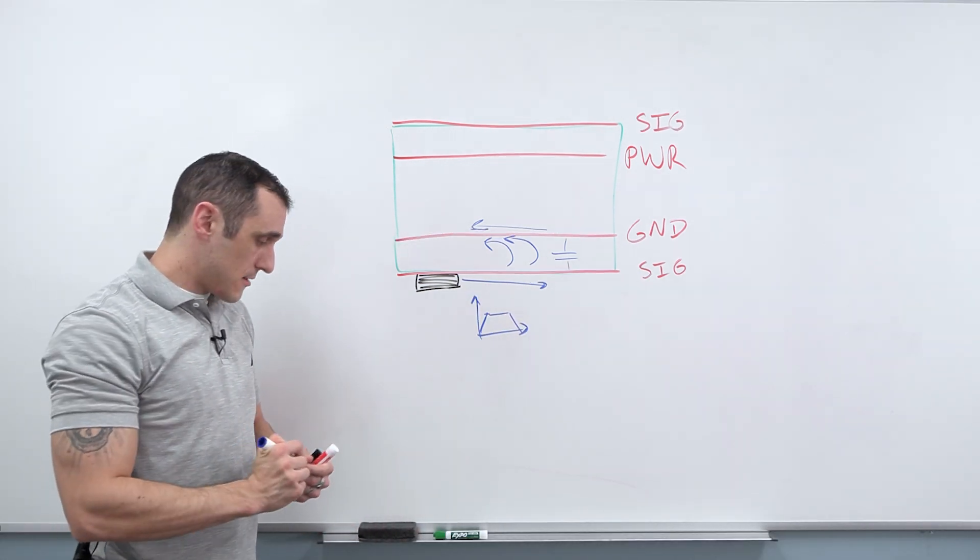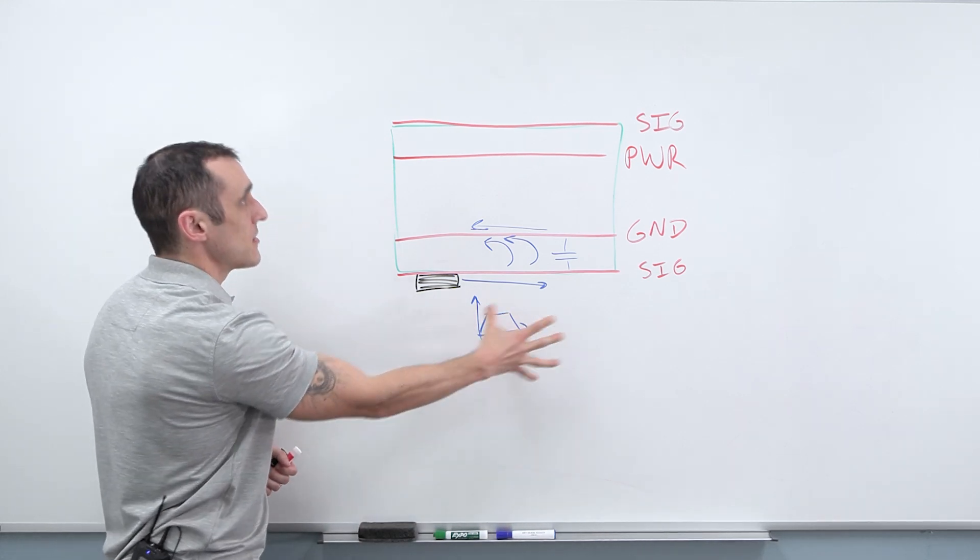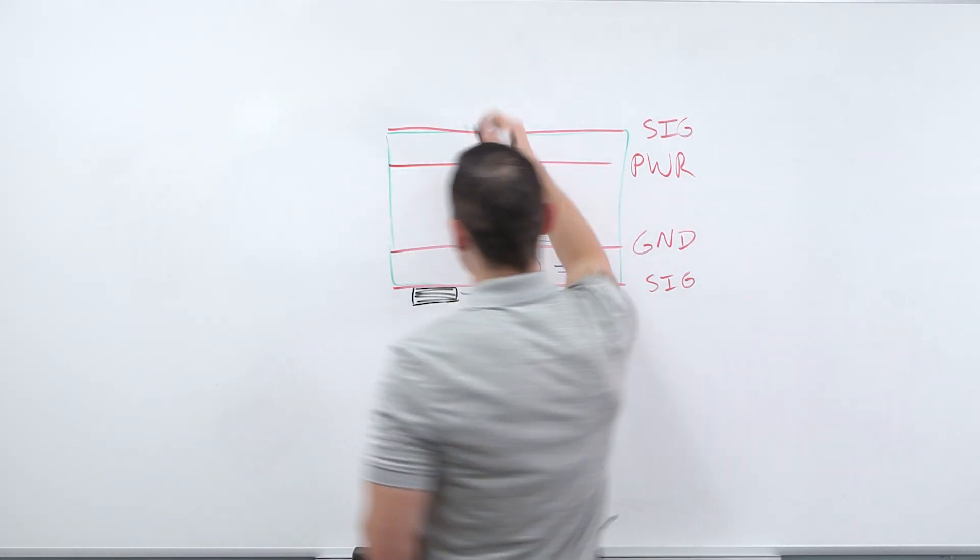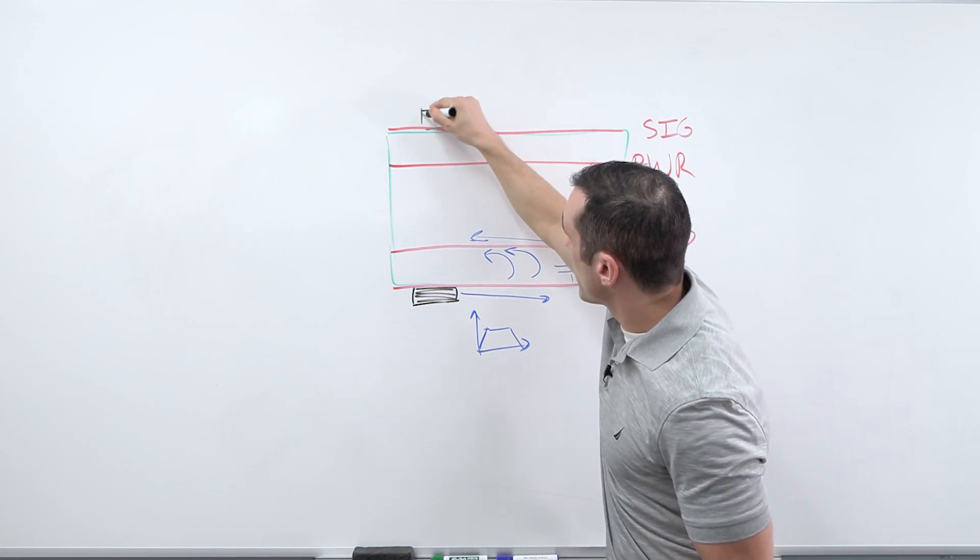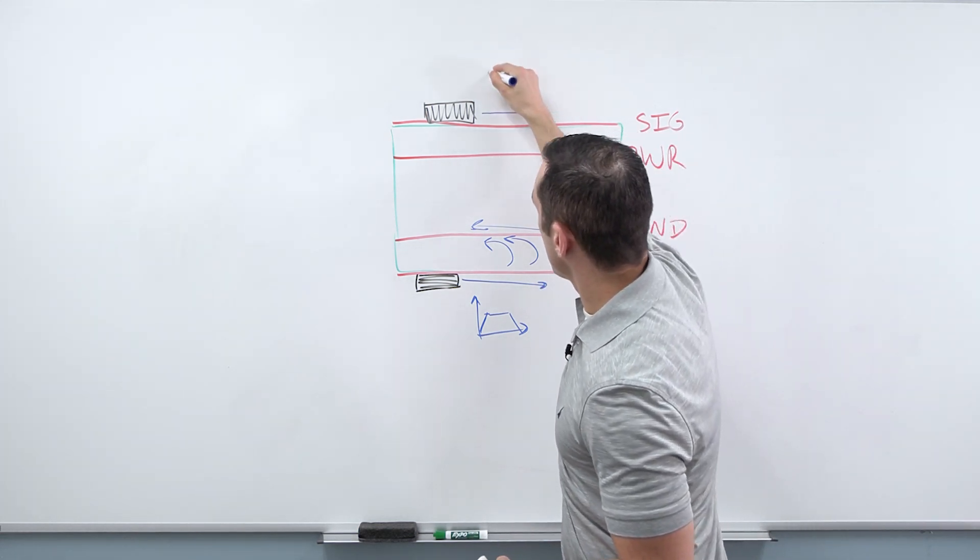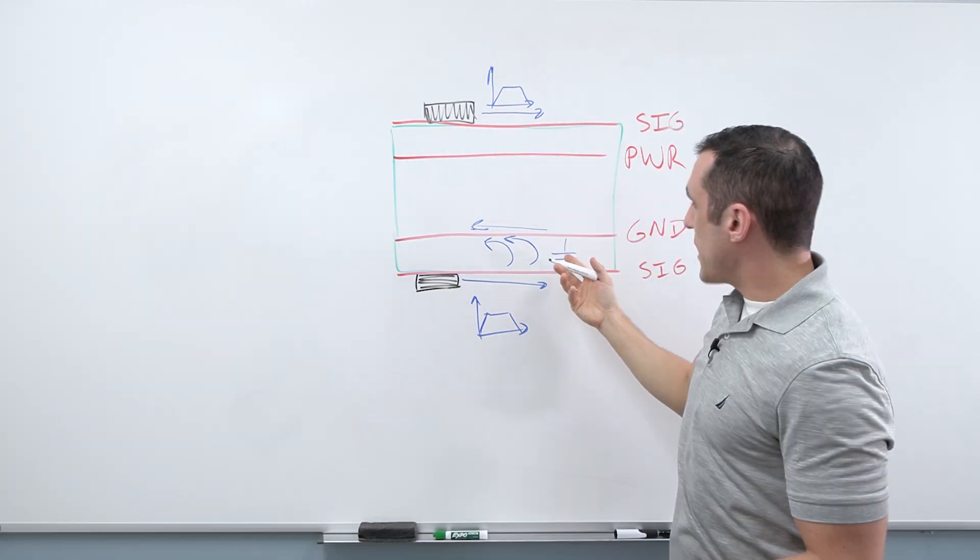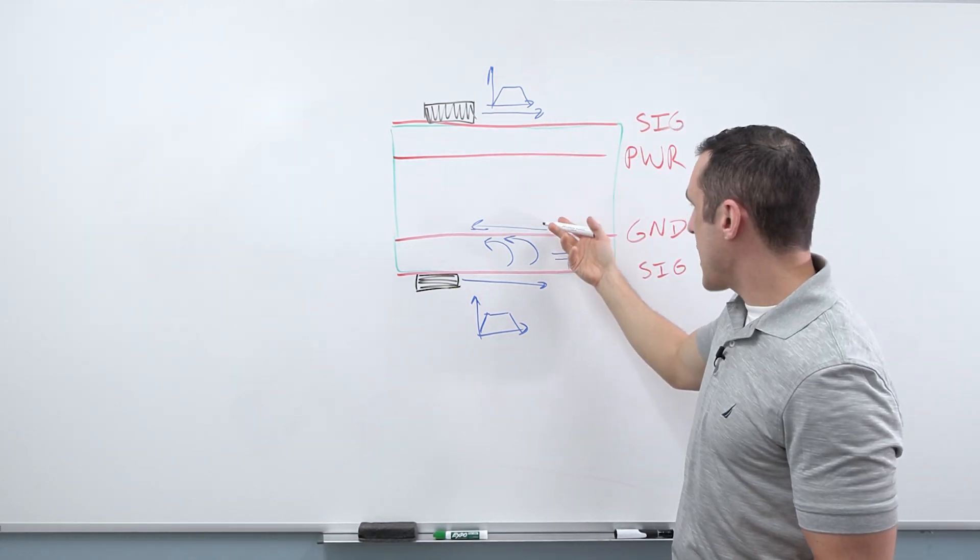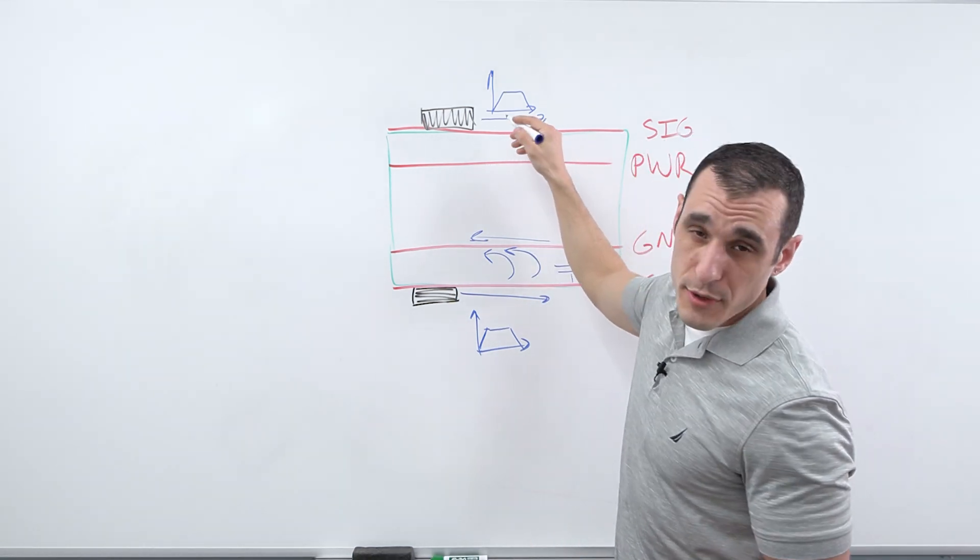So now, the next question that you should naturally ask is, what happens if we did this up here? Let's just say, for a moment, I have a chip up here and I want to now route a signal this direction. So I've got my typical digital signal and I'm going in this direction. Do we have this same type of effect that we had in the ground plane in the power plane? Well, the answer is yes, we do.